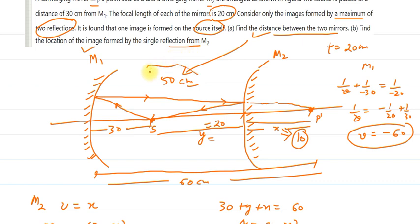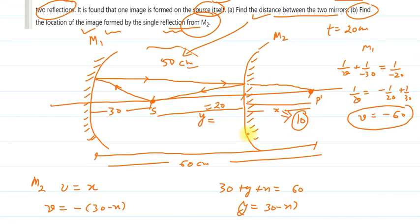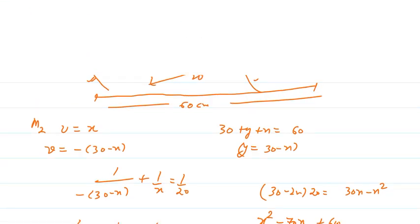Now the second question asks: find the location of the image formed by single reflection from M2. If we consider single reflection from M2, x is 10, so the image at 20. If we consider single reflection from M2, then u is 20 and obviously v is 10. You can solve this for M2 if you consider single reflection. The source is at 20 cm distance from M2. Put the expression: 1/v + 1/u, but in this case u is -20, and focal length is 20. So 1/v = 1/20 + 1/20 = 2/20, which means v = 10. So 10 is the answer for the second question. Thank you.